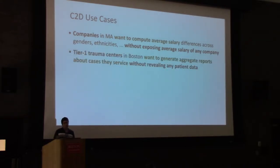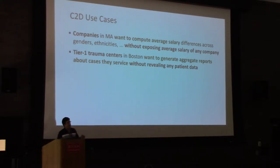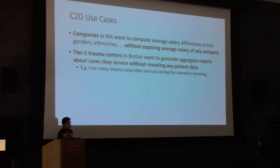A similar use case from the Boston area: Tier 1 trauma centers in Boston want to generate aggregate reports about cases they service without revealing any patient data. They are governed by very heavy regulations and are not allowed to share data with each other, but they want to be able to say, for example, how many trauma cases they serviced during the Boston Marathon bombing.